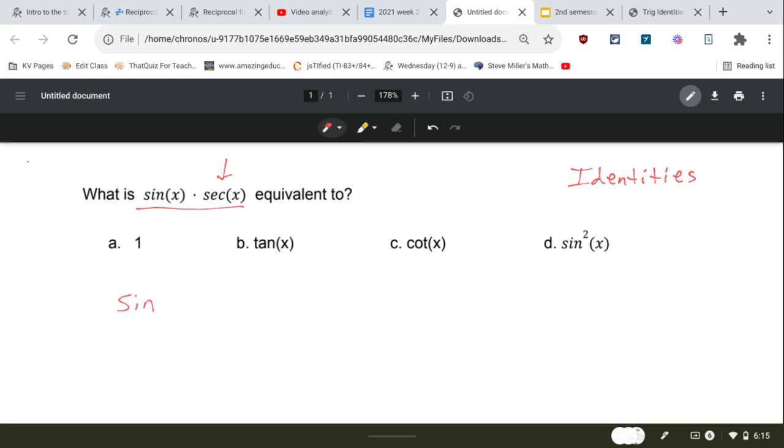So leave that first one alone. We're just going to leave that as sine of x. And then the secant of x, in terms of sine or cosine, it's going to be one over cosine. Okay, and then we'll multiply straight across. So we get sine over cosine, which is equal to tangent.